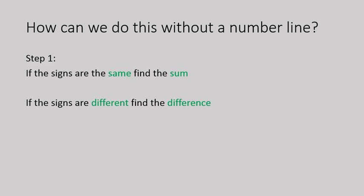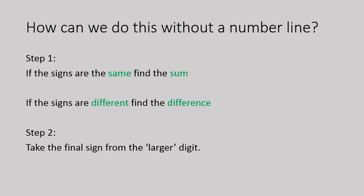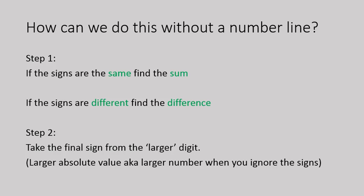If the signs are different, you find the difference. And with that, you'll need to take the final sign from the larger digit — technically the larger absolute value, but it's the larger number if you just ignore the signs. We'll look at several examples of that in comparing.